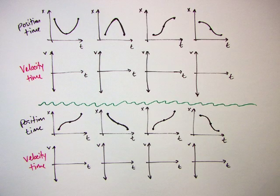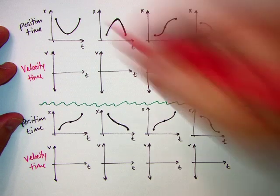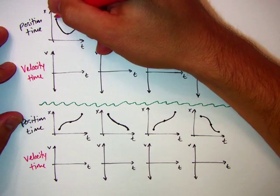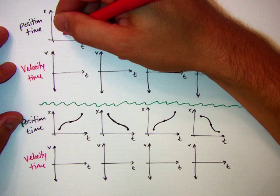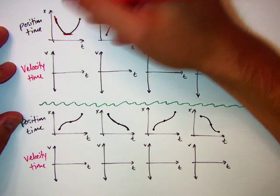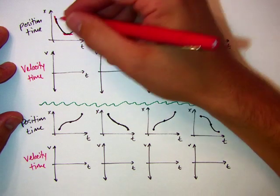Okay, so let's look at some slightly more complicated examples, position time to velocity time. We still look at the slope. So we start here with a negative slope, large steep negative slope. Here I go to a slope of zero, and here I go to a positive slope.